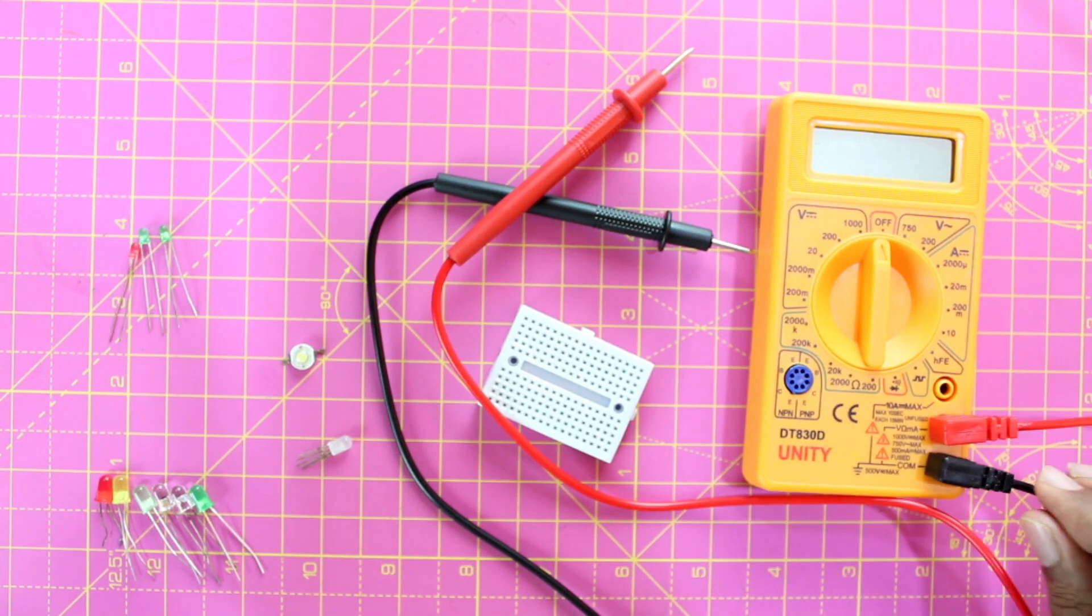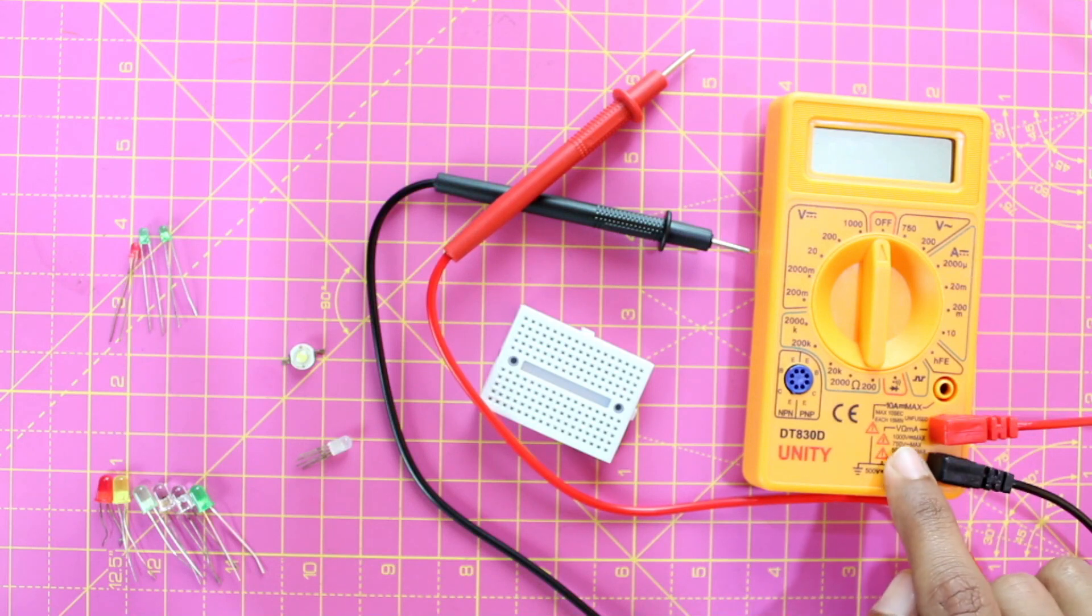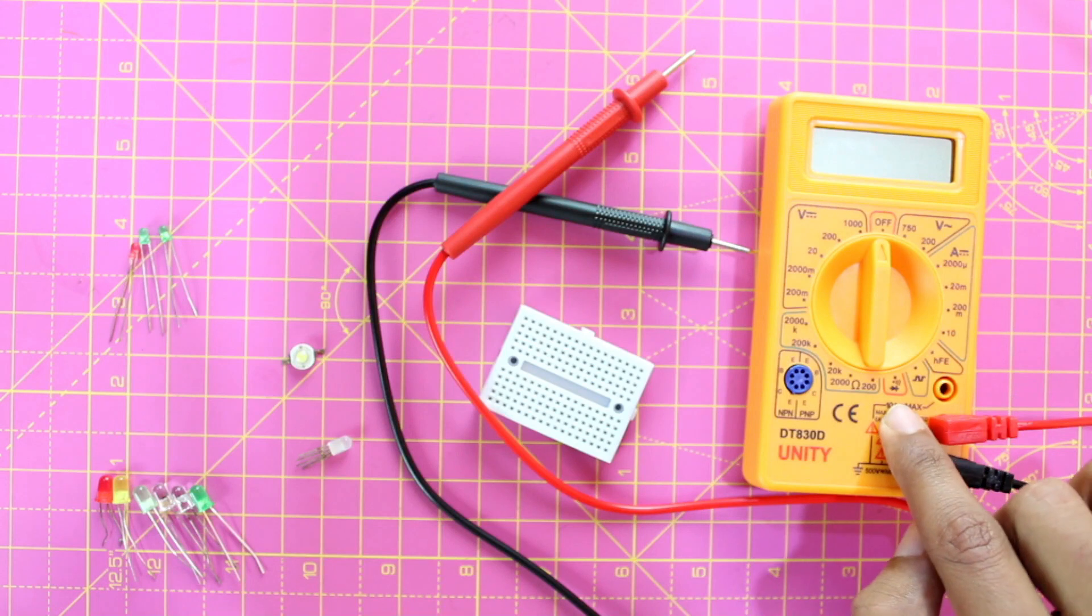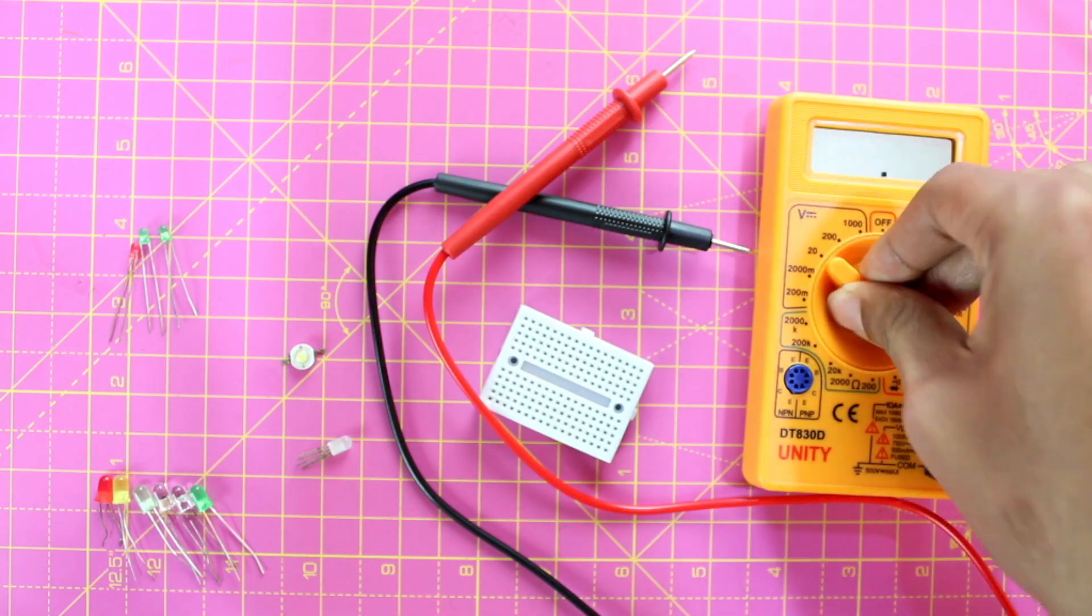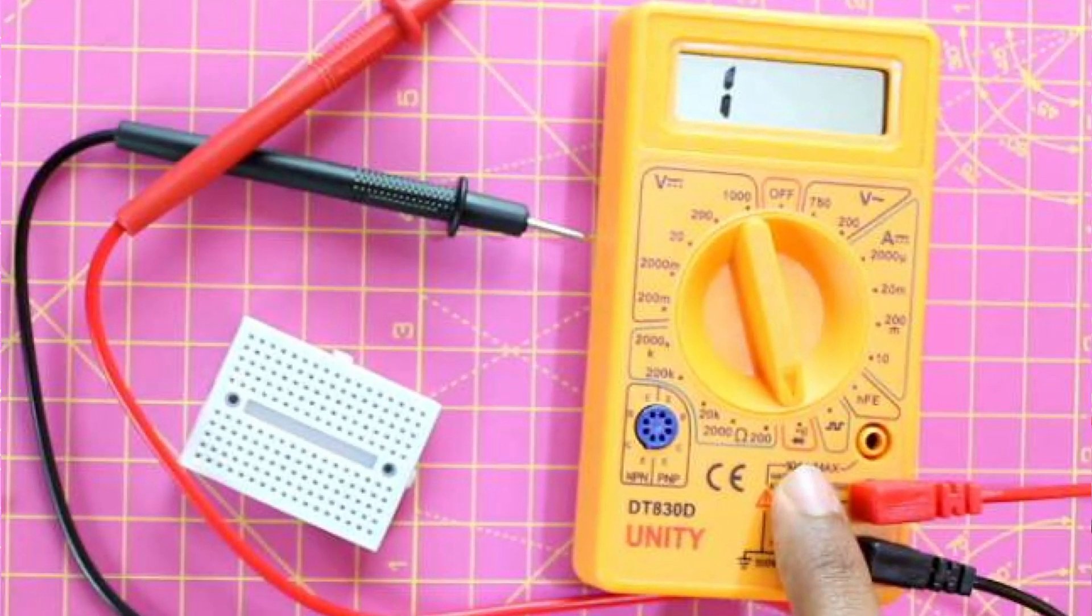To get started, make sure that your black probe is connected to the COM and the red probe is connected to your V/mA. Then you have to turn the dial of your multimeter to the diode mode. You can identify the diode mode using this symbol. Once it is in diode mode, you can start testing your LEDs.